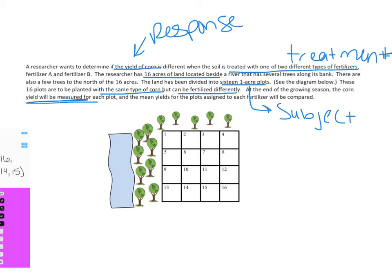There are a lot of outside factors to keep in mind. There's a river and trees in different areas. If we only put fertilizer A on the left side and fertilizer B on the right, outside factors could explain any difference — for example, proximity to water could provide more hydration to those corn plants, and trees could cause shade issues. On other parts of the land there might be too much sun. So we want to make sure we evenly distribute the different types of fertilizer across the plots using randomization.